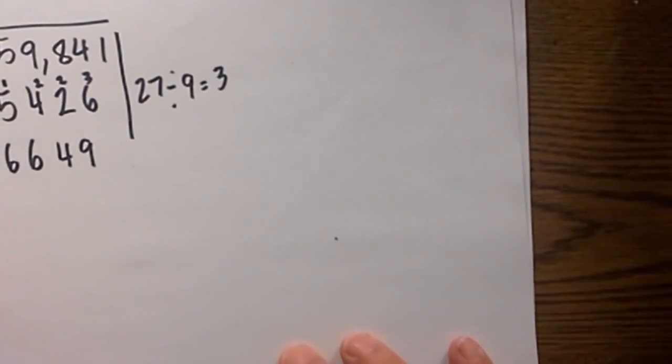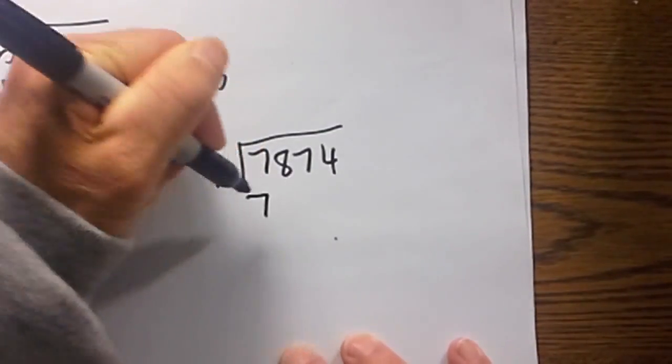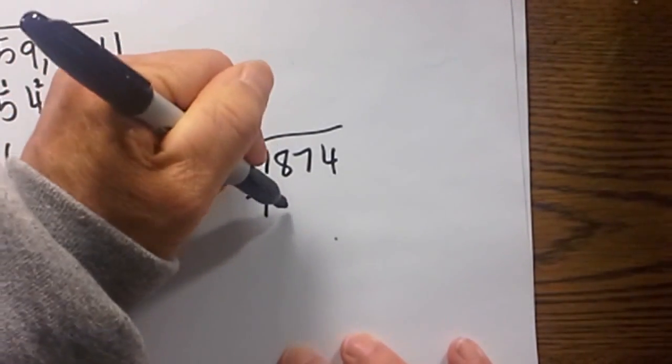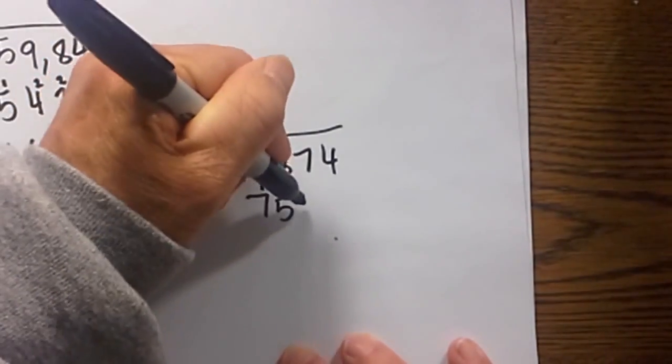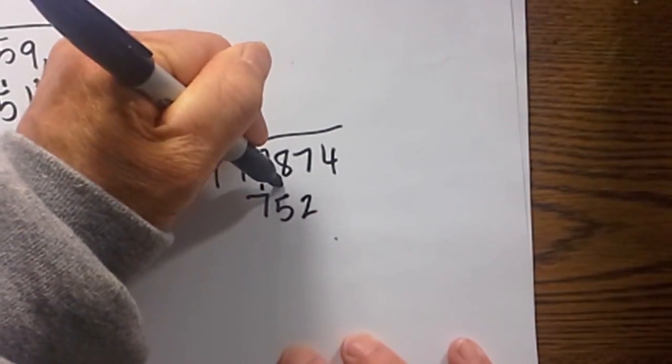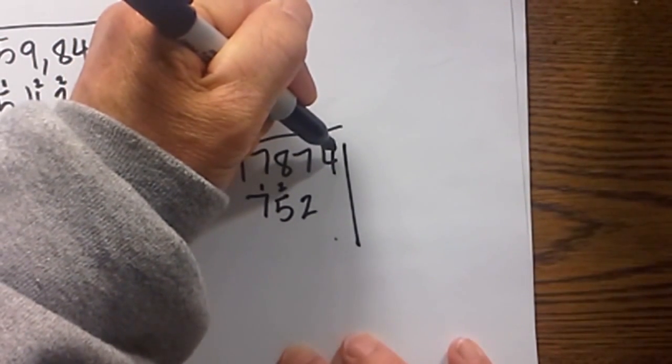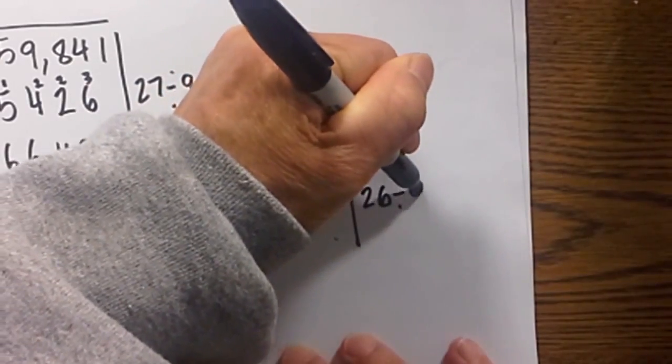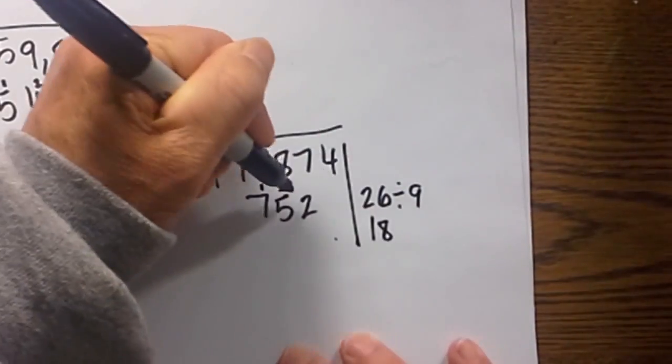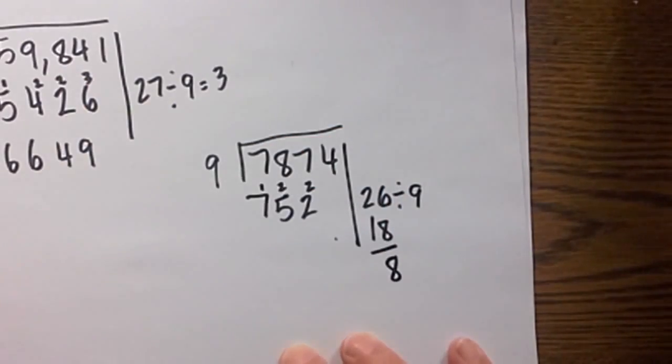Last one: 7,841 divided by 9. Bring the 7 down, 7 plus 8 is 15, place a 1 there. 15 plus 4 is 19, excuse me, 15 plus 7 is 22, place a 2 here. Draw a line since it is my last digit. 22 plus 4 is 26. 26 divided by 9, 9 will go into it 2 times with a remainder. 26 minus 18 is 8.